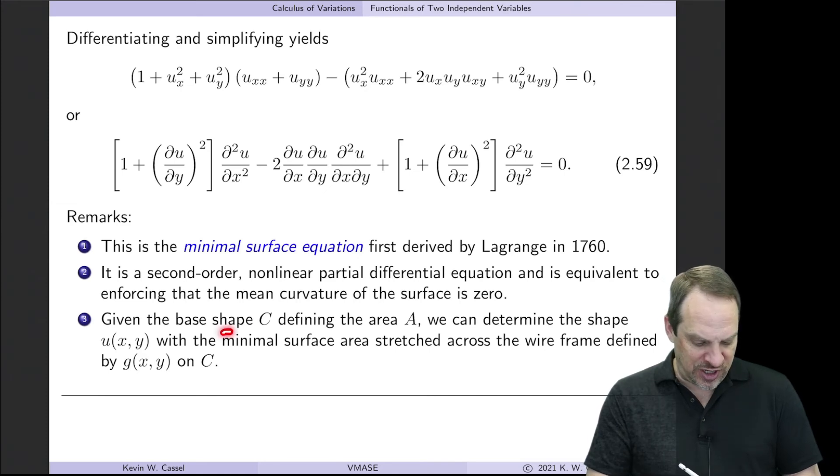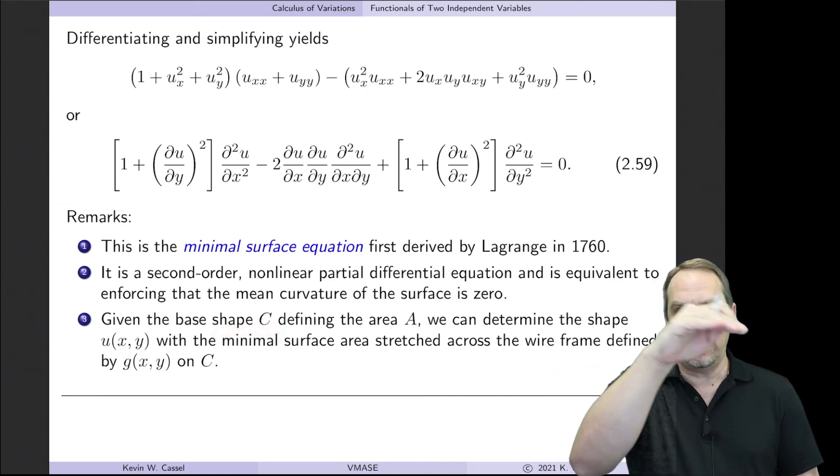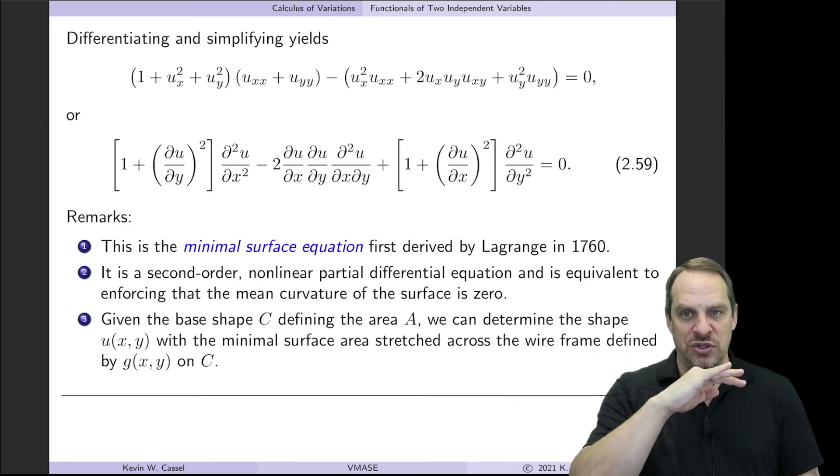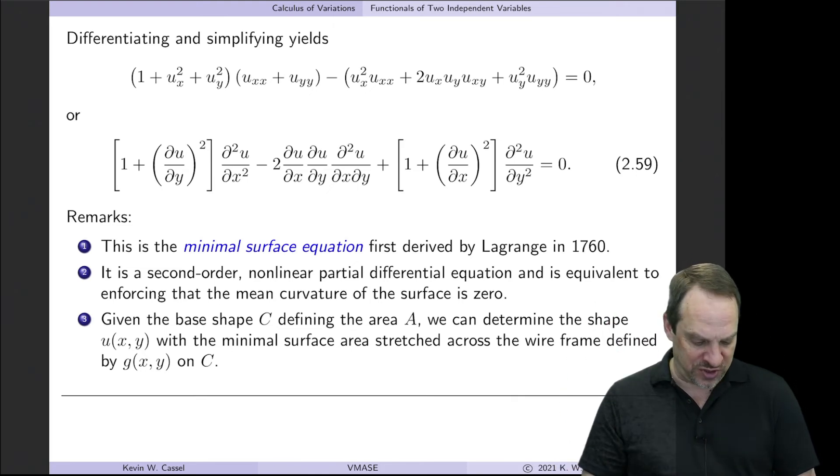So once again, if you're given the shape c and the height of u, so the value of u on c all the way around, then you can solve this PDE to get the shape of the soap film that stretches between your wire frame.